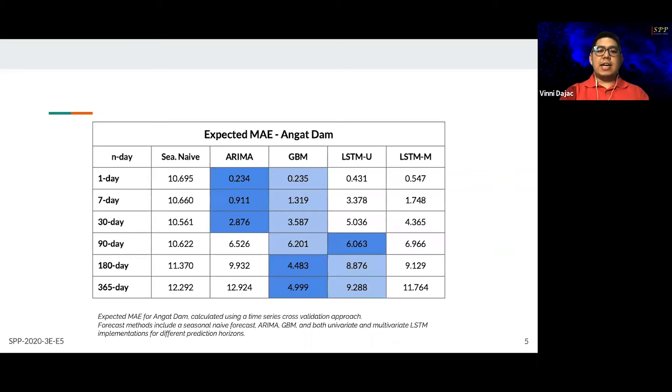Here are the results for Angat Dam. For a given prediction horizon, the lowest MAE is highlighted in dark blue while the second lowest MAE is highlighted in light blue. We see that GBM performs consistently well in all prediction horizons. Also, ARIMA is best for short-term while LSTM also does well for long-term.